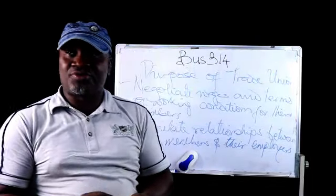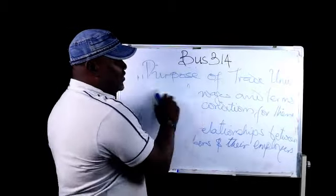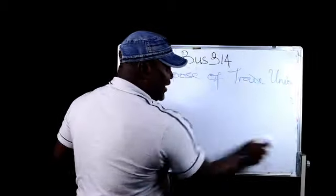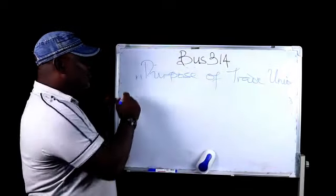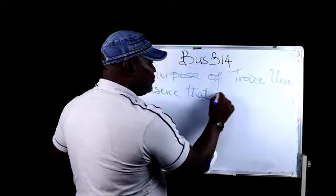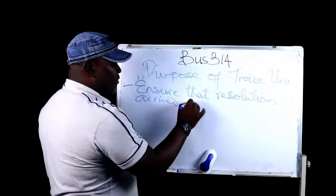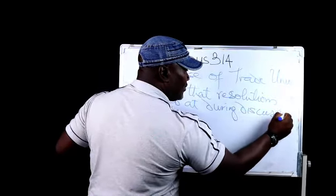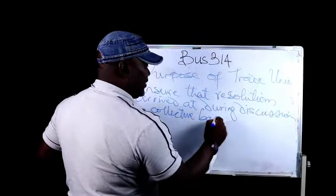They take collective actions to enforce resolutions of collective bargaining. When you have issues in an organization, for instance regarding wages or terms of condition, and there are crises or differences arising, there is bound to be bargaining between the employer and the employee. One of the purposes of a trade union is to ensure that resolutions arrived at during collective bargaining are enforced.